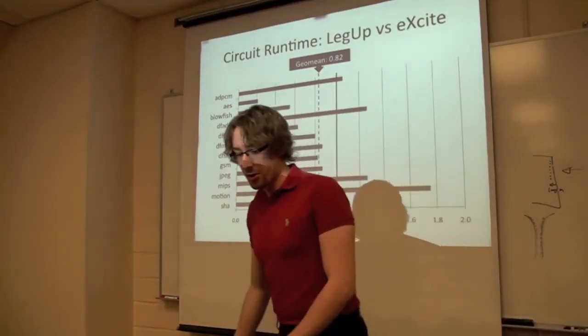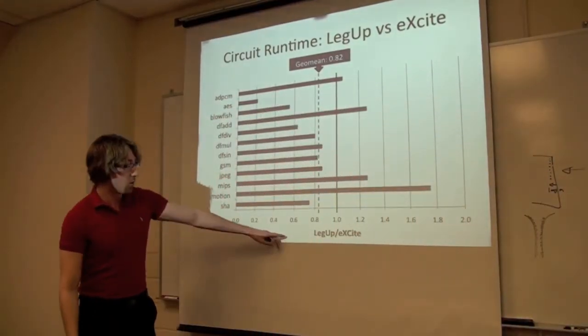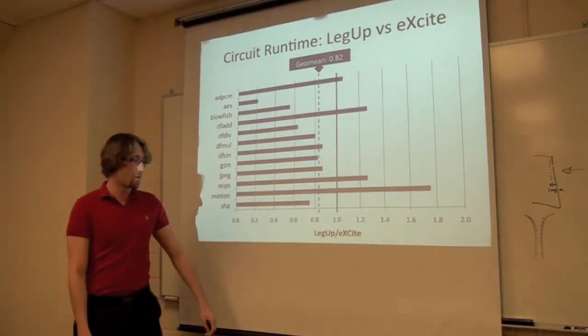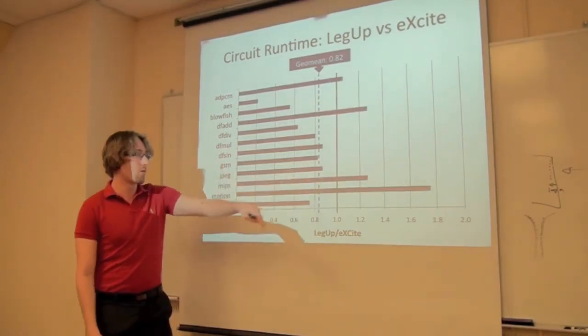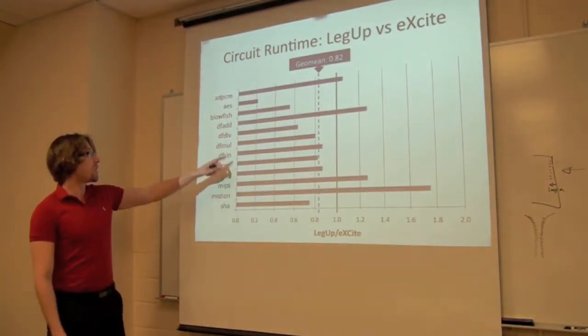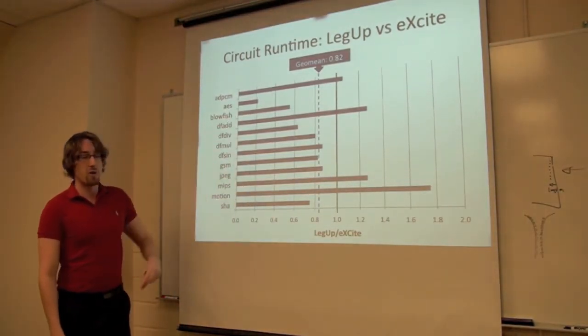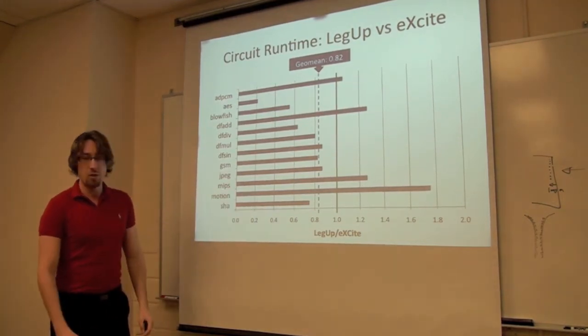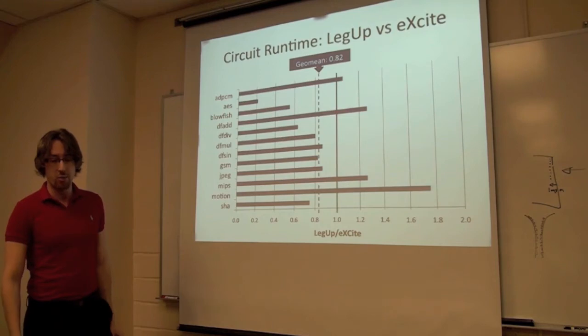That's also shown graphically. This is the ratio of LegUp circuit run time over Excite run time. If we're left of this black line we're faster. If we're right we're slower. So there's a couple outliers here. For instance AES we're about 5 times faster. But motion we're 2 times slower. This probably has to do with the pipelining we did versus Excite.